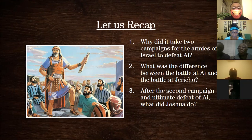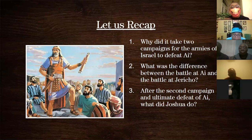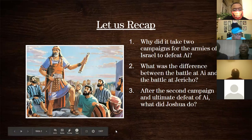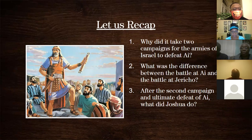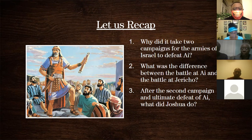Starting with question one: why did it take two campaigns for the army of Israel to defeat Ai? Remember back in our last study we were talking about that battle — they went out to Ai the first time, were defeated, and then they went out a second time and won. Someone in the group had been disobedient — Achan had taken some things he wasn't supposed to. So because of what Achan did, it took them a second campaign, and when they went to Ai again they totally defeated it.